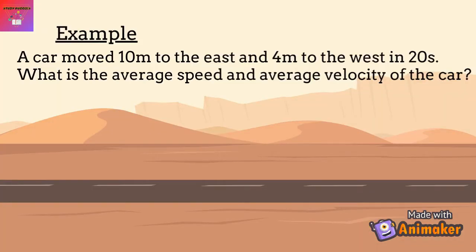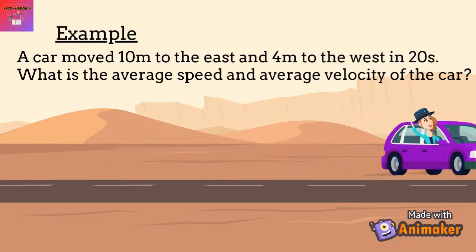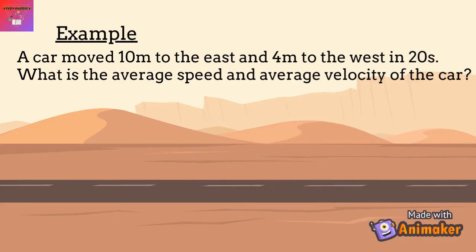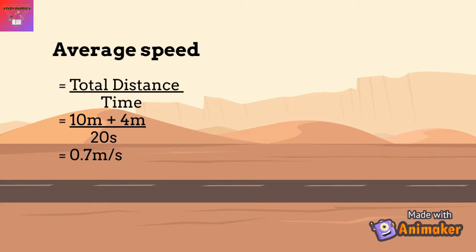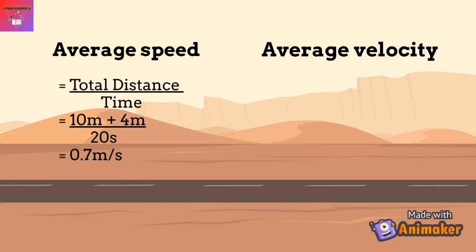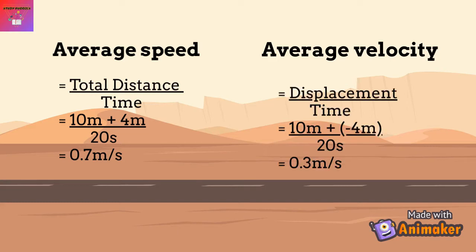Let's try a question. A car moves 10m to the east and 4m to the west in 20 seconds. What's the average speed and average velocity? The total distance is 10m plus 4m, divided by 20 seconds, giving an average speed of 0.7m per second. To find average velocity, displacement is 10m plus negative 4m equals 6m, divided by 20 seconds, giving 0.3m per second.